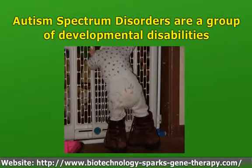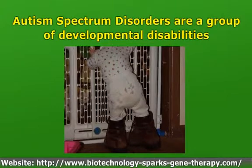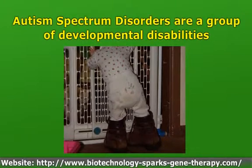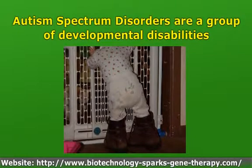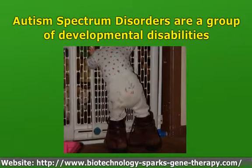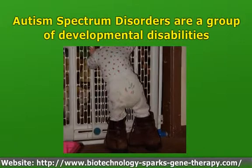Rett syndrome is caused by mutations in the MECP2 gene located on the X chromosome. It can arise sporadically or from sex cell chromosome mutations. It is a disorder of the brain that affects females more commonly than males, featuring small hands and feet, deceleration of the rate of head growth, and repetitive hand movements. Rett syndrome is the most disabling pervasive developmental disorder.